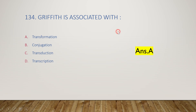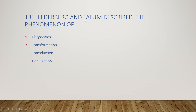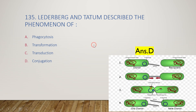Griffith is associated with transformation, conjugation, transduction, or transcription? The answer is option A, transformation. Lederberg and Tatum described the phenomenon of conjugation — right answer is option D. Conjugation means the transfer of extrachromosomal DNA like a plasmid from a donor cell to a recipient cell through pili. Through pili, one plasmid is transferred from one bacterial cell to another, so both donor and recipient end up with a copy of the plasmid.